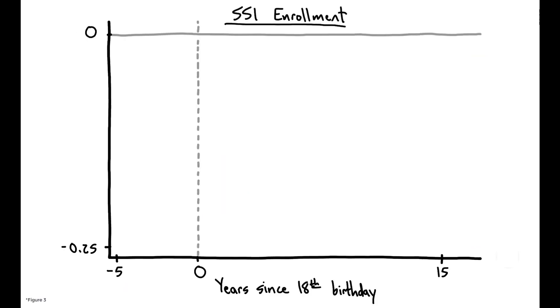This figure shows the probability of being enrolled in SSI for individuals in the treatment group relative to the control. Prior to turning 18, there is no measurable difference between the two groups, and this persists up to two years after the child's 18th birthday due to administrative lags.